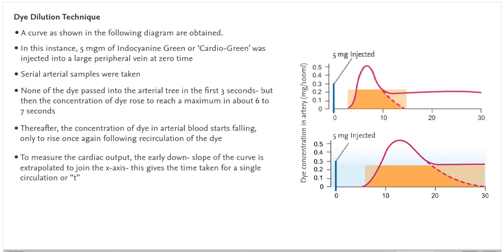To measure the cardiac output, the early down slope of the curve is extrapolated to join the x-axis. This gives the time taken for a single circulation, or T.